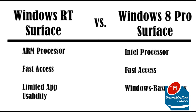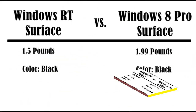Windows 8 Pro, on the other hand, is running on an Intel processor. It provides a touch cover for your Surface and runs Windows-based apps that Windows RT cannot run, for example, Microsoft Office.